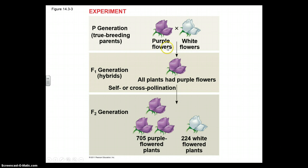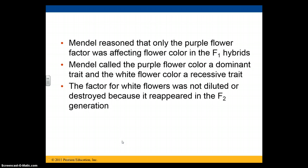In the parent generation he has a purple flower and a white flower. He crosses them to give a purple flower in the F1 generation. All of the F1 purple flowers, whether they self-pollinated or cross-pollinated, would yield roughly a 3 to 1 ratio of purple to white flowers in the F2 generation. Mendel thought that only the purple flower factor was going to affect the flower color in the F1 hybrids, so he called purple flower color a dominant trait, because when it was present it seemed to show up. And he called white flower color a recessive trait.